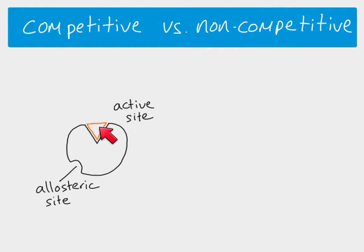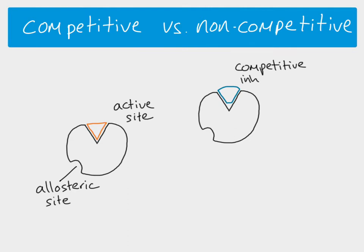The substrate molecule will bind to the active site. If we have a competitive inhibitor, the competitive inhibitor also binds to the active site. If the competitive inhibitor is bound to the active site while it's there, the substrate molecule is prevented from binding as well, because the competitive inhibitor is in the way.